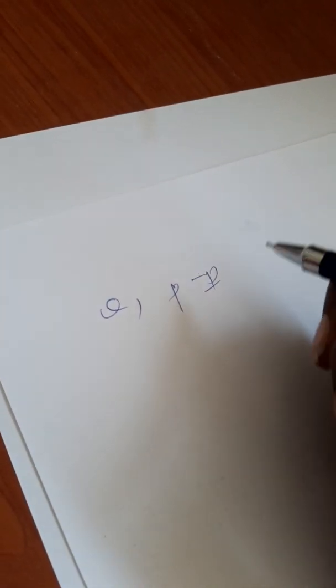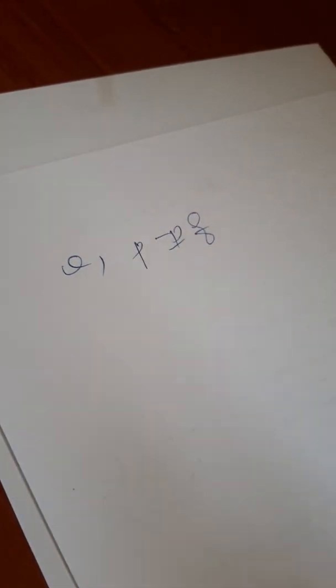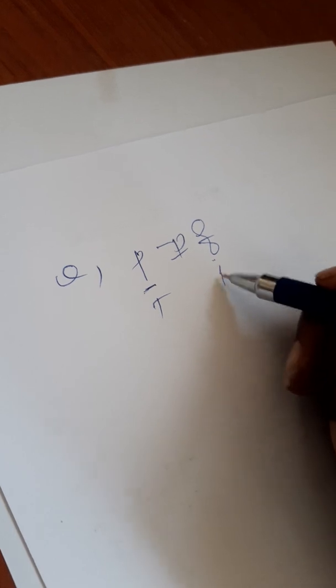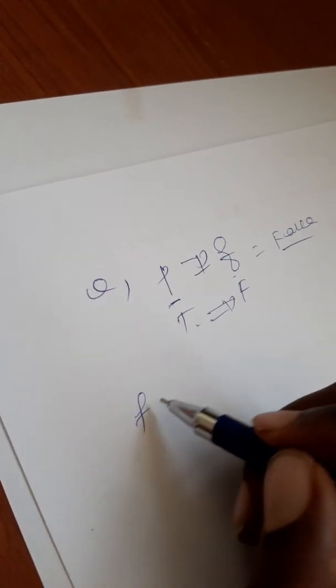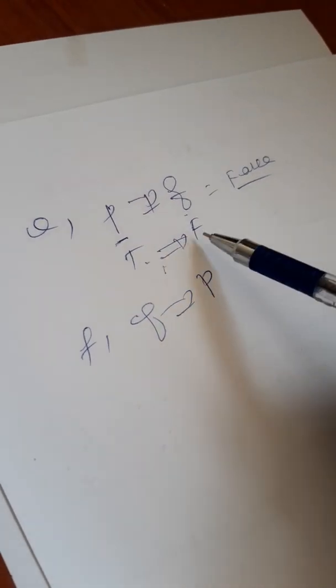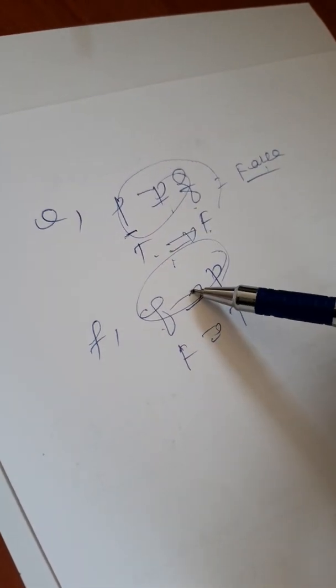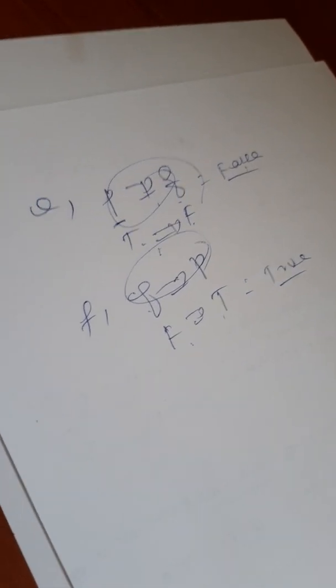For p implies q: p is true, q is false, so p implies q is false. For q implies p: q is false, p is true. False implies true — by the implication truth table, false implies true is true.